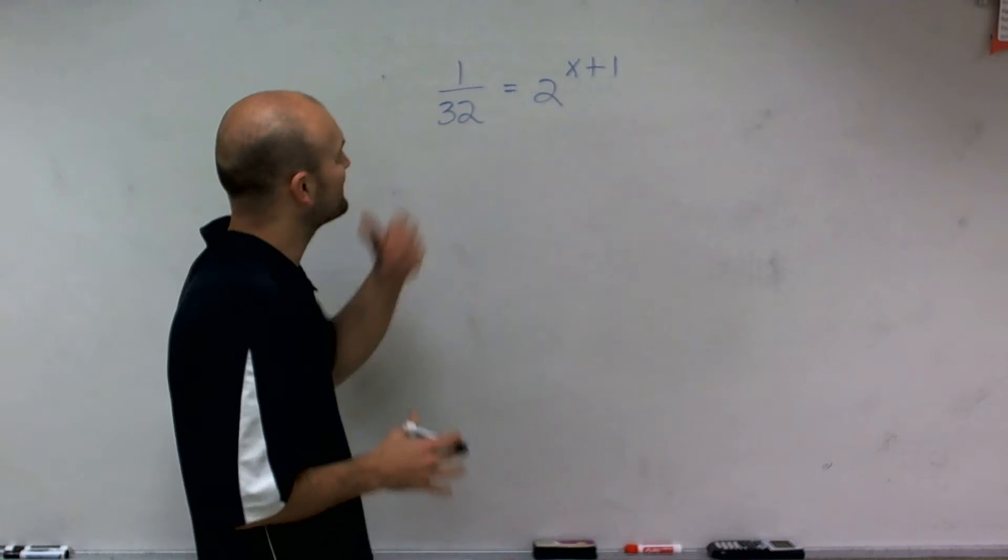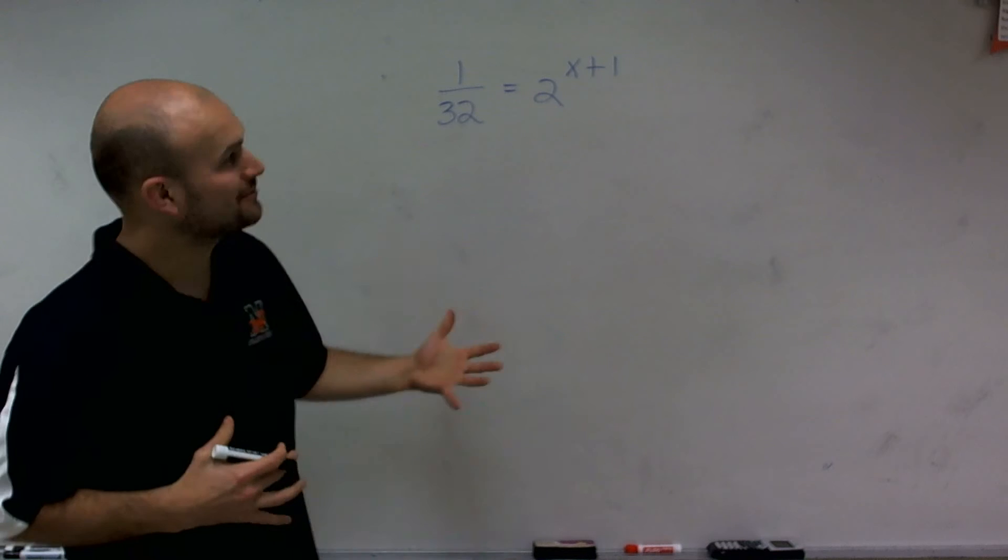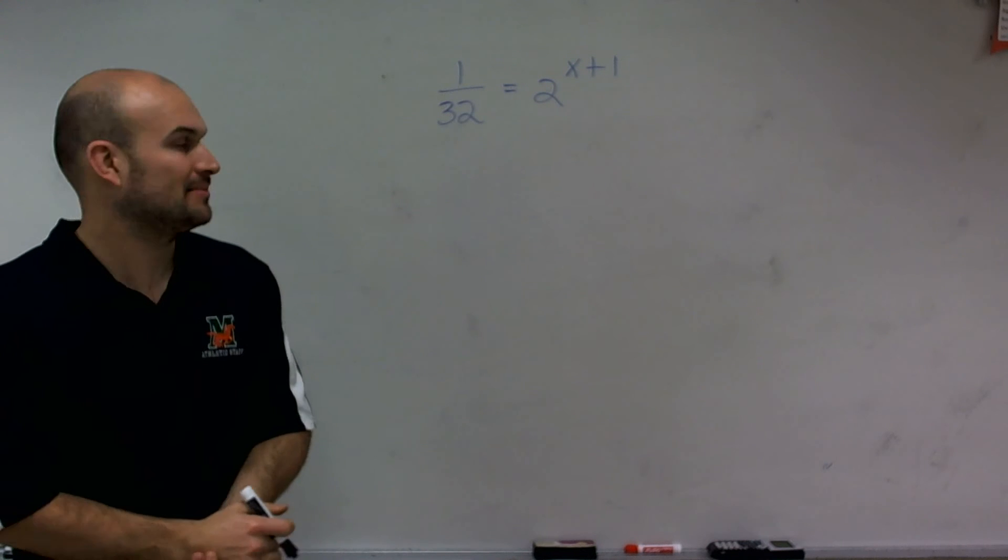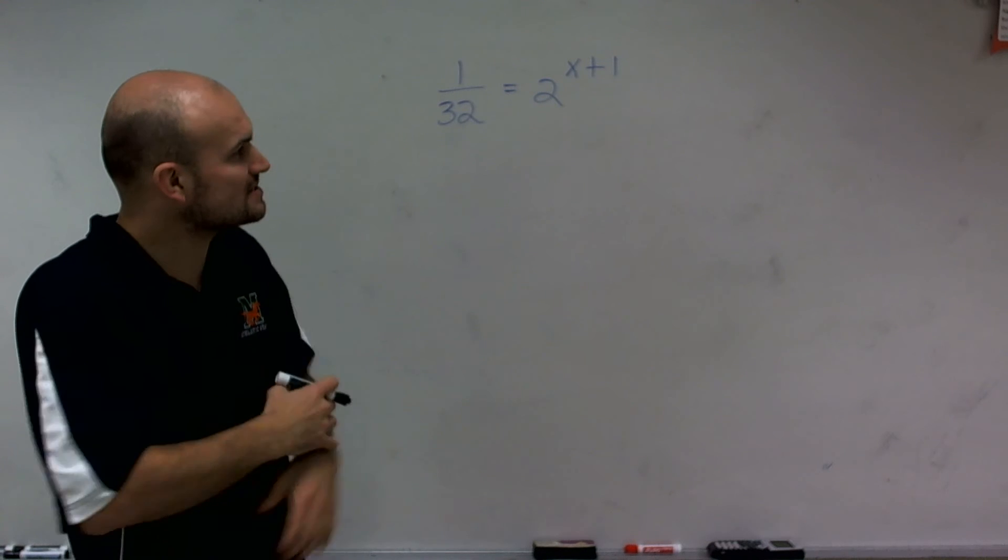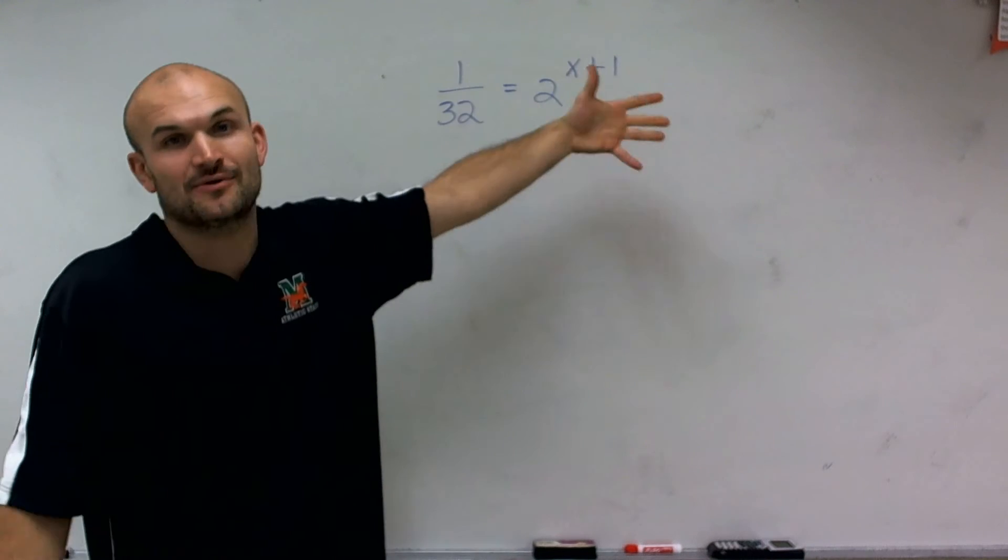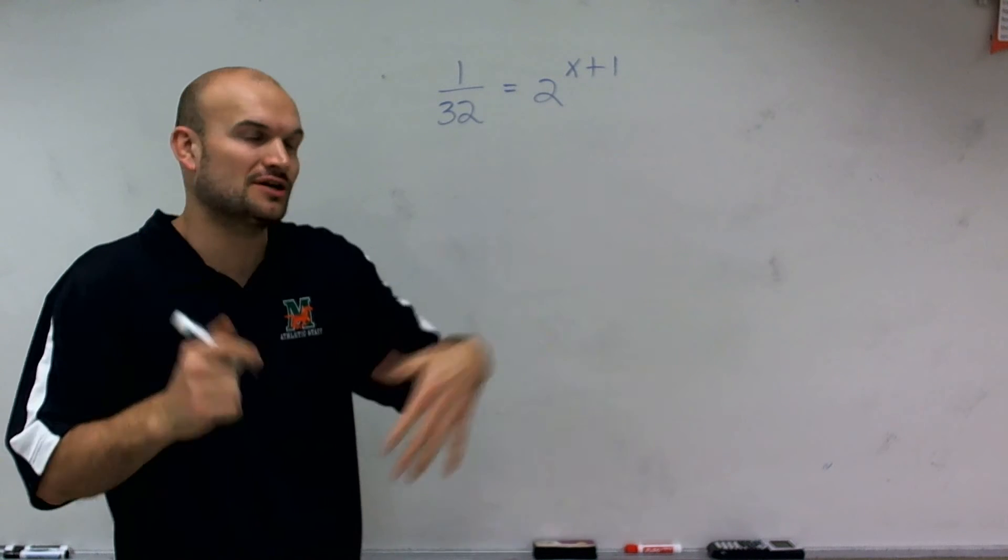OK. So what I have is 1 divided by 32 equals 2 raised to the x plus 1 power. And what I want to do for this problem is somehow see if I can get the powers to be exactly the same so that I can evaluate and set the exponents equal to each other.